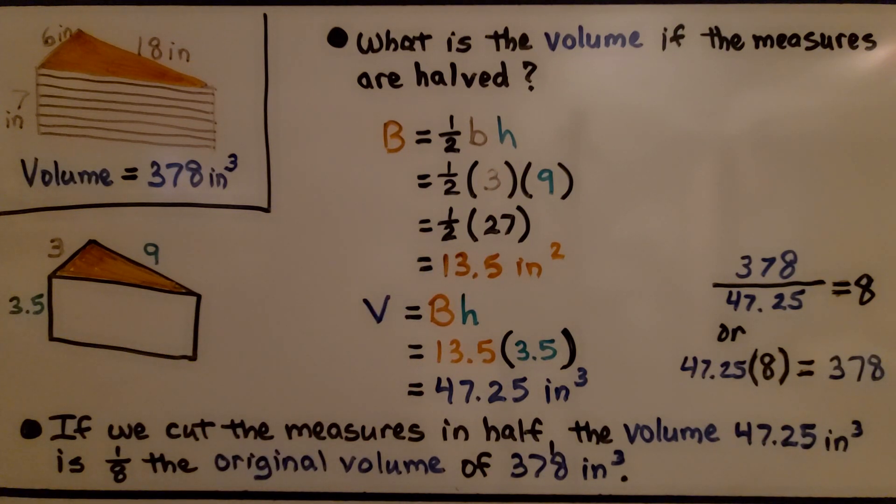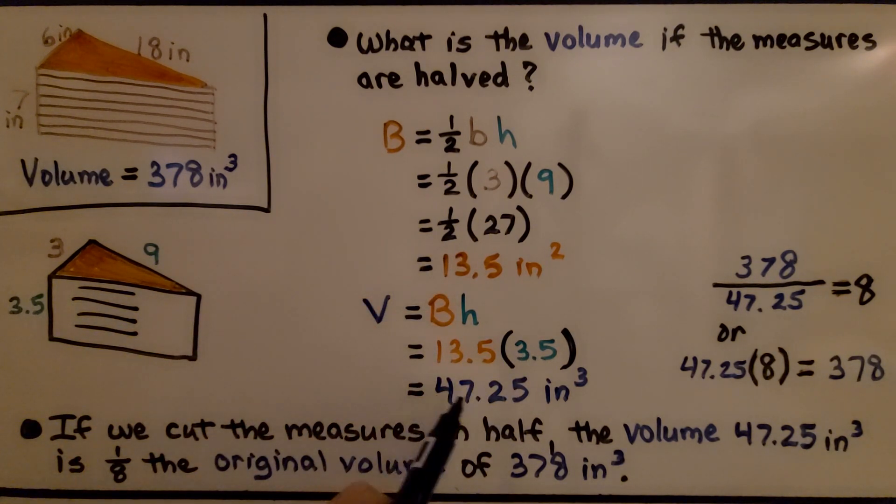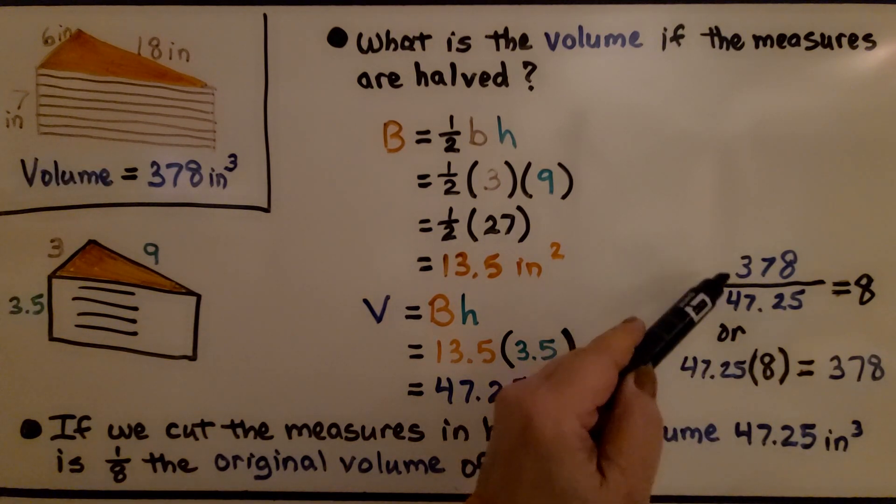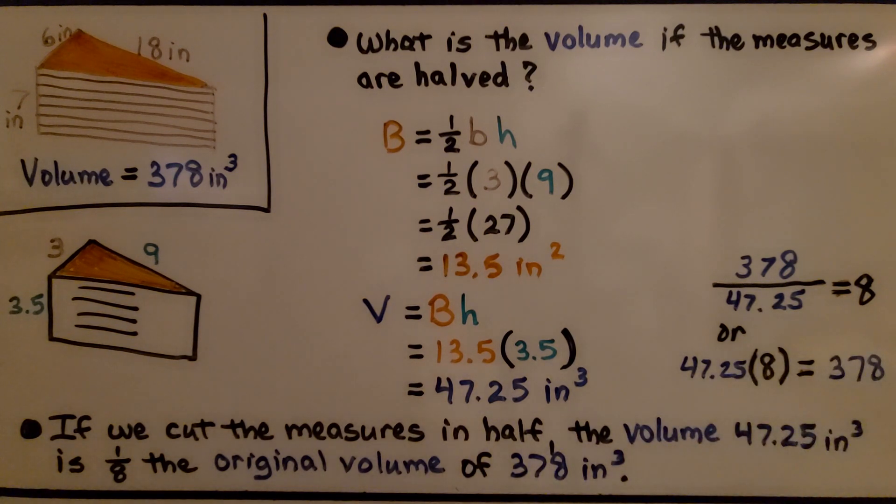To find the volume, remember we've got the layers—3.5 layers. 13.5 × 3.5 = 47.25 inches cubed. If we cut the measures in half, the volume of 47.25 inches cubed is one-eighth the original volume of 378 inches cubed. 378 ÷ 47.25 = 8, or 47.25 × 8 = 378. This is only one-eighth of the original. If we cut the measures in half, the volume is one-eighth the original volume.